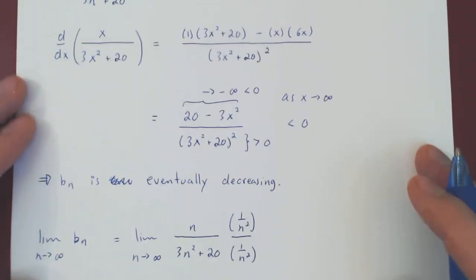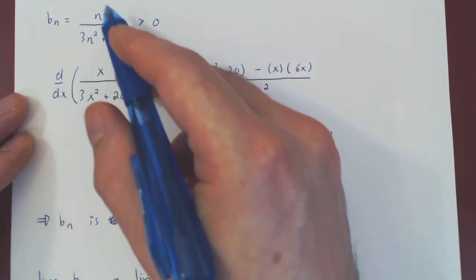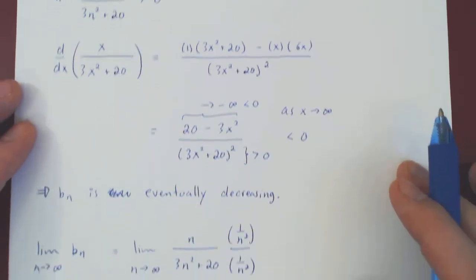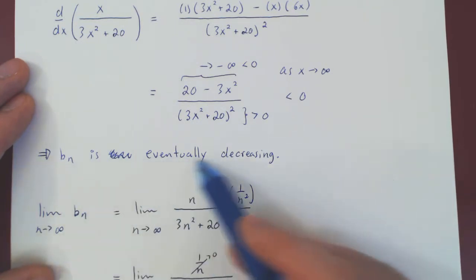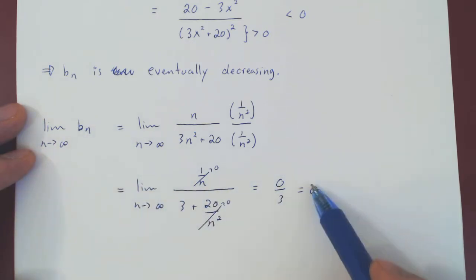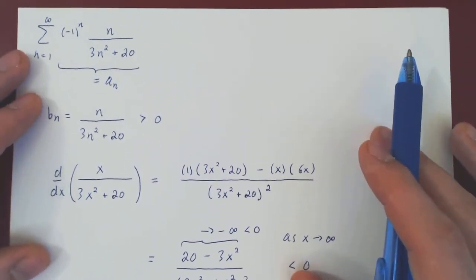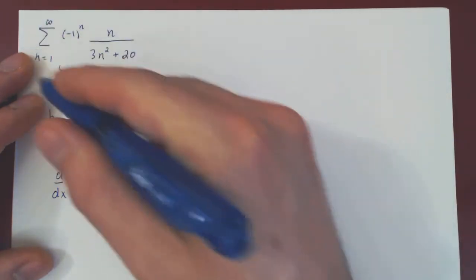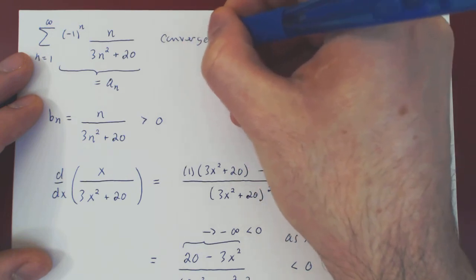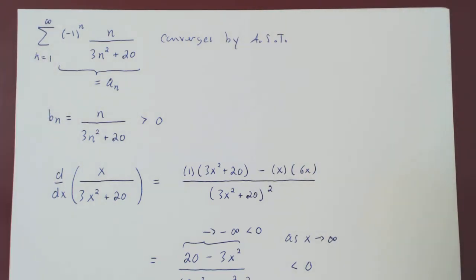So our two conditions are met. By proving that the derivative of the continuous analog is negative when x is very large, this proves that bn is eventually decreasing, and as n tends to infinity, bn approaches 0. So the two conditions are satisfied, and so the initial alternating series converges by the alternating series test. And that's it.